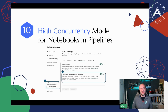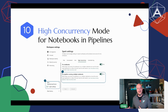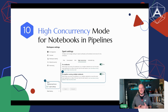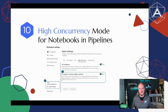Number ten is high concurrency mode for notebooks and pipelines — one that's probably easy to overlook but a big one in my opinion. When building metadata-driven pipelines and frameworks, you're essentially executing notebooks multiple times with different table metadata being passed through. The fact that we can use the same session and not swallow up multiple sessions in a pipeline is great news. It's brilliant to see.